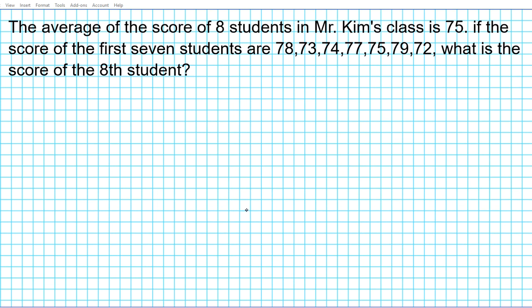It reads: the average score of 8 students in Mr. Kim's class is 75. If the scores of the first 7 students are 78, 73, 74, 77, 75, 79, and 72, what is the score of the 8th student?